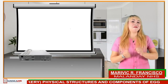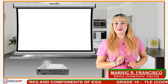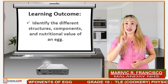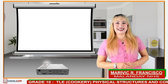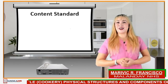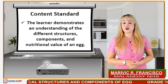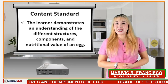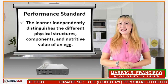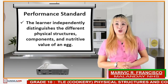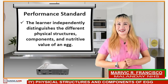The learning competency for this module is to perform meals and class. For the learning outcome, it's to identify the different structures, components, and nutritional value of an egg. For the content standard, the learner should demonstrate an understanding of the different structures, components, and nutritional value of an egg. For the performance standard, the learner should independently distinguish the different physical structures, components, and nutritive value of an egg.